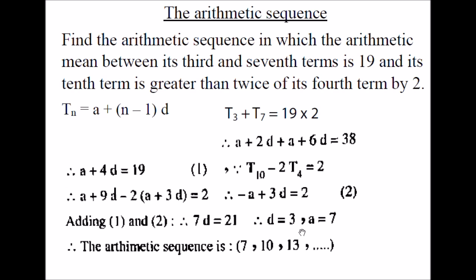A is 7 and D is 3. The arithmetic sequence starts at A equals 7; add 3 for each term to get the next term. The second term is 7 plus 3 equals 10, then 10 plus 3 is 13, and so on. Therefore the arithmetic sequence is 7, 10, 13, and so on.